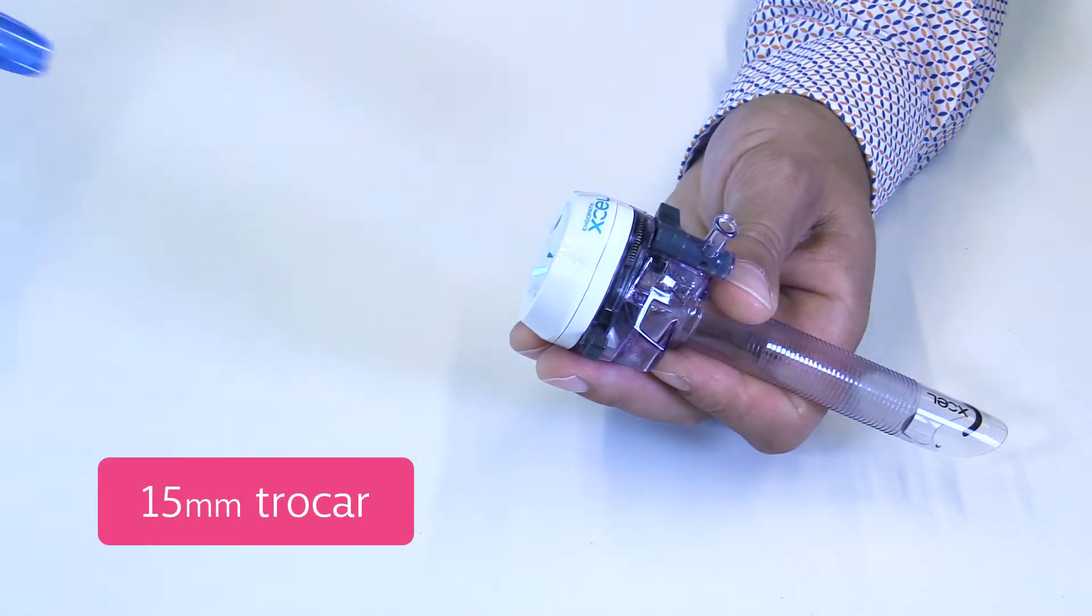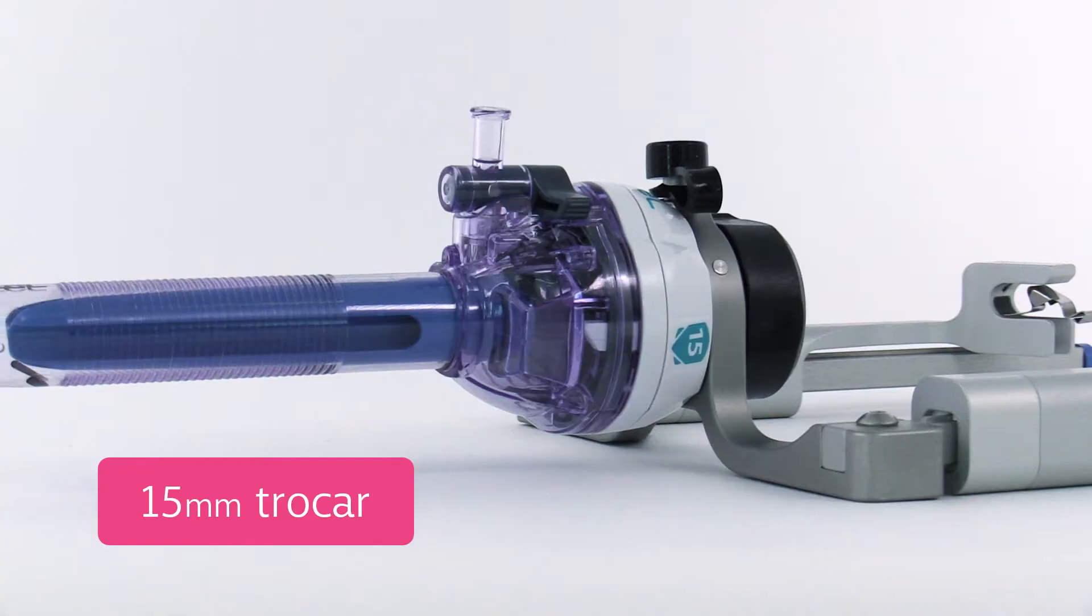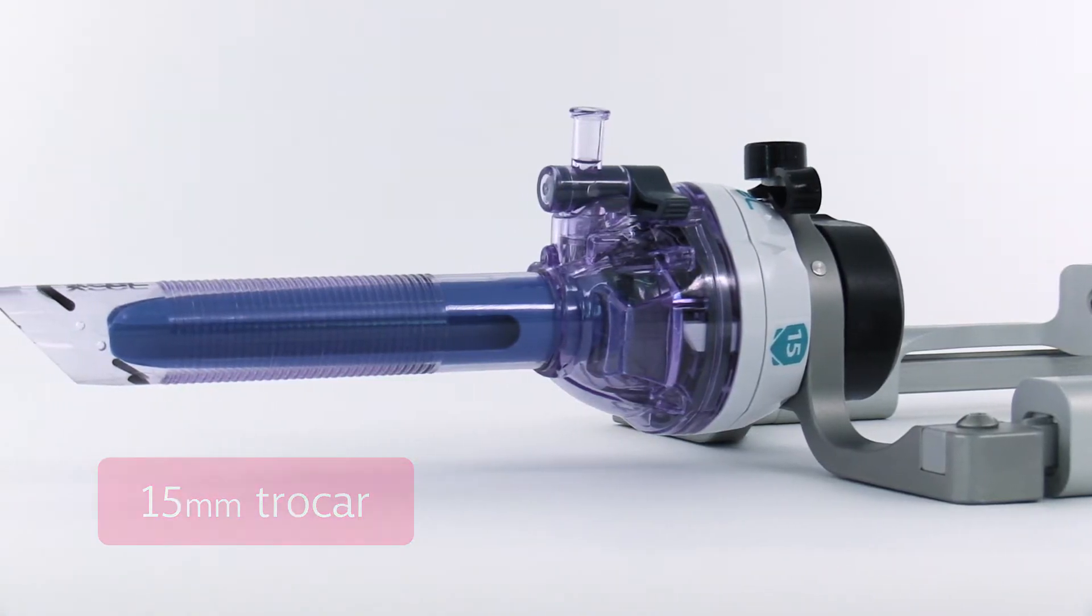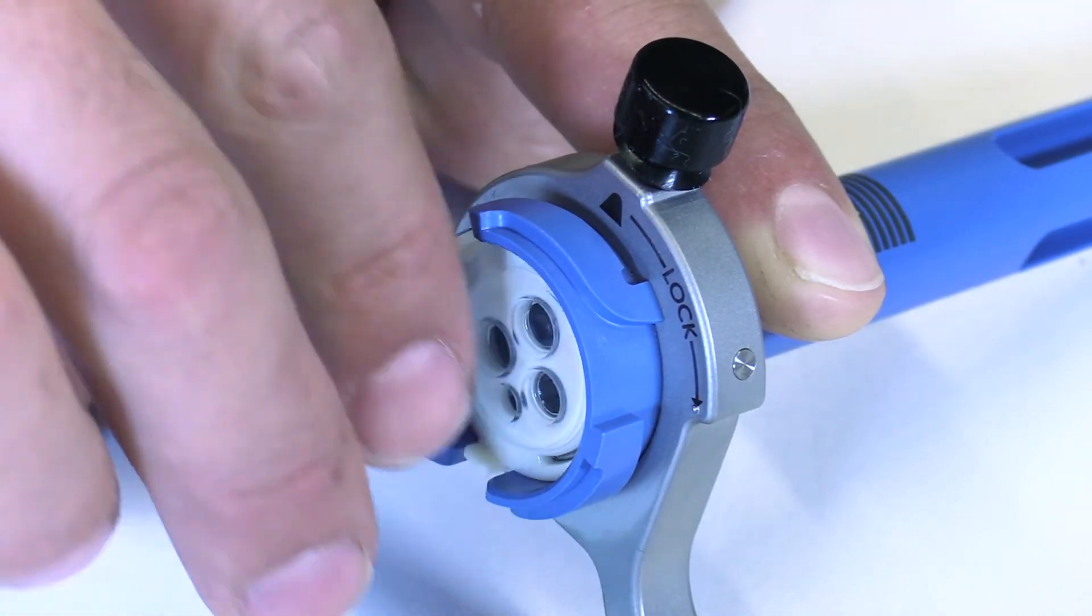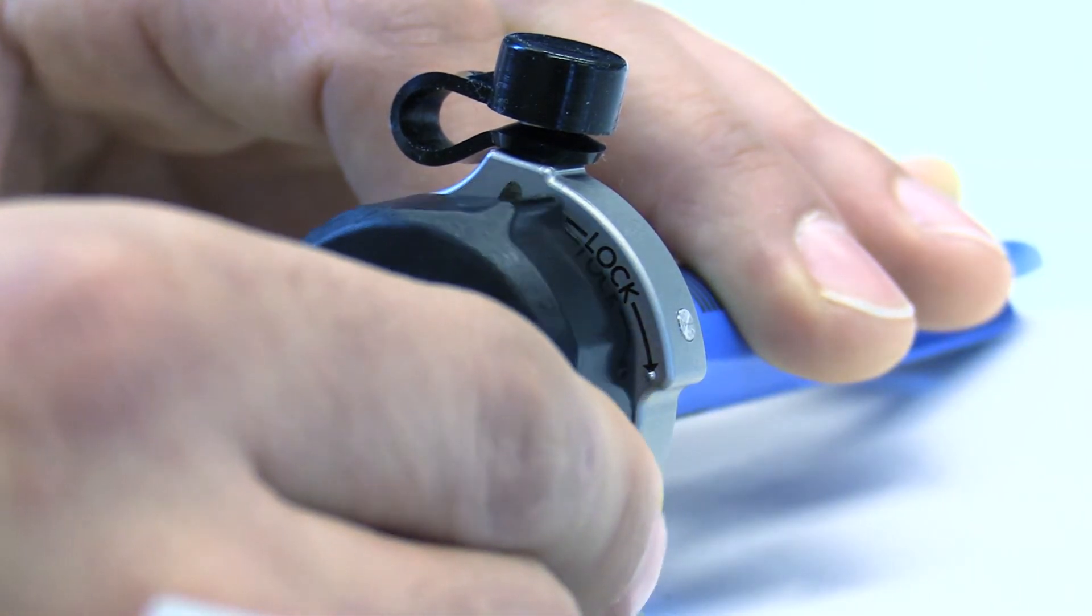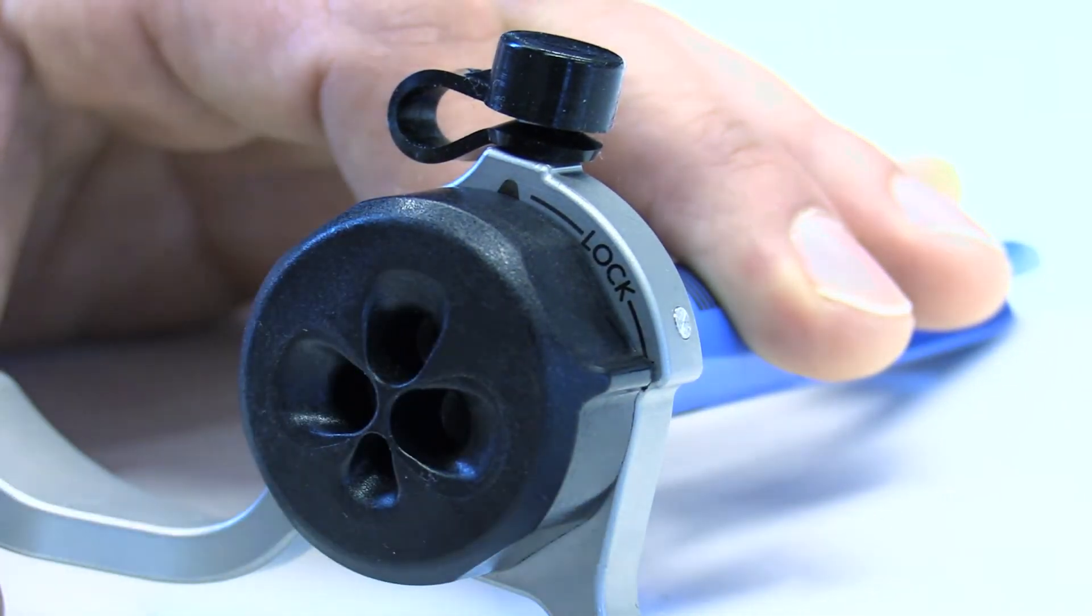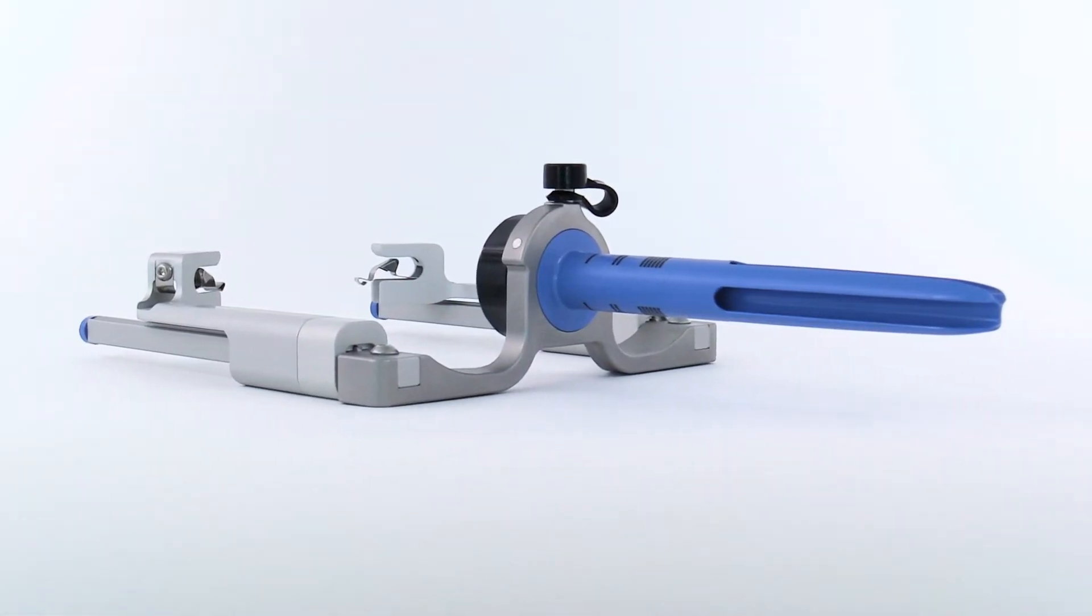The introducer is inserted through a 15 millimeter trocar in the umbilicus in free-floating mode. To maintain pneumoperitoneum throughout the procedure, a disposable sealing unit is loaded and locked into position with a cap. The introducer is reusable and can be easily cleaned, sterilized, and maintained.